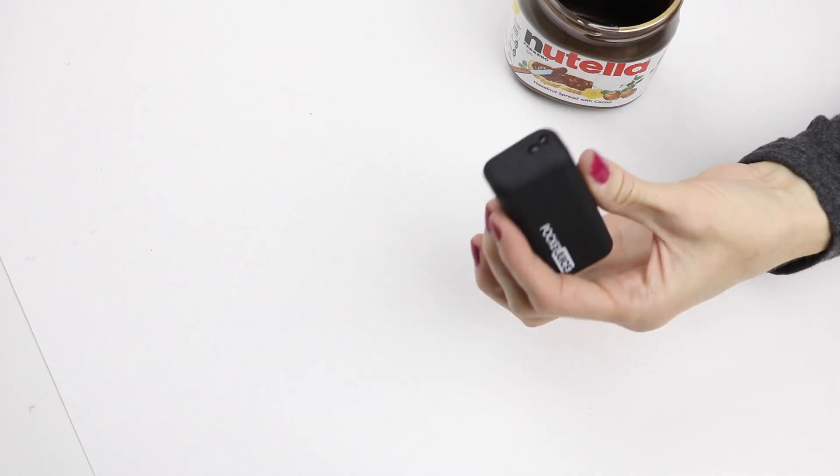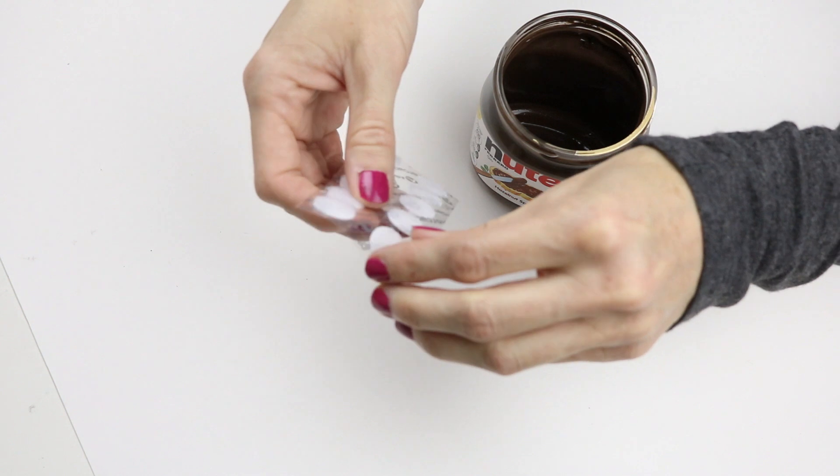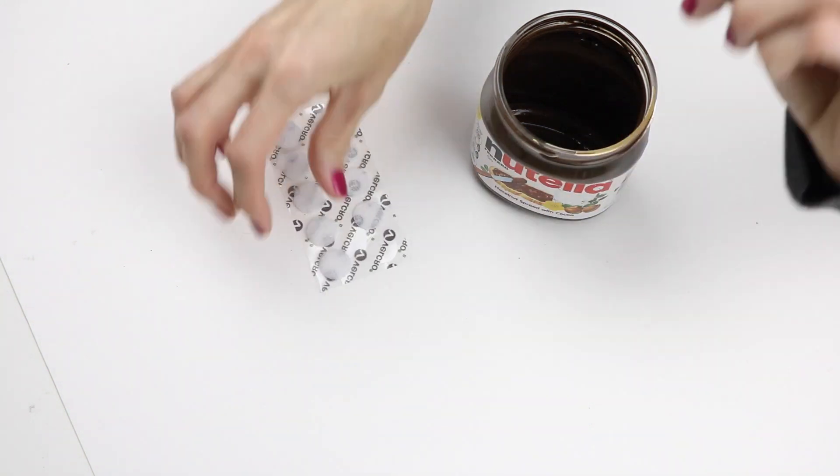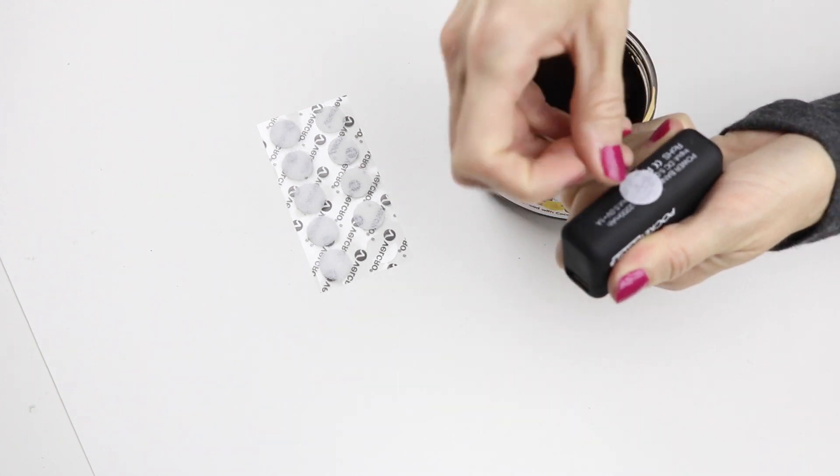I'm going to be using this pocket portable charger and these velcro tabs. Apply one side of the velcro to the bottom of the charger and the other to the inside of the Nutella container.